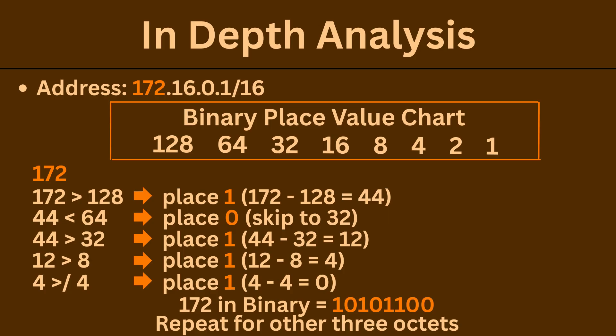In an in-depth analysis, we will expand on the first octet: 172. Your binary place value chart goes 128, 64, 32, 16, 8, 4, 2, and 1. We will convert 172 from decimal to binary. 172 is greater than or equal to 128, so we place a 1, then subtract — we're left with 44. 44 is less than 64, so we place a 0 and skip to the next value. 44 is greater than or equal to 32, so we place a 1, then subtract — we're left with 12. 12 is less than 16, so we place a 0 and skip to the next value.